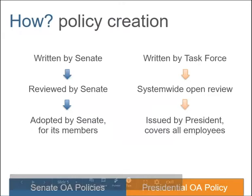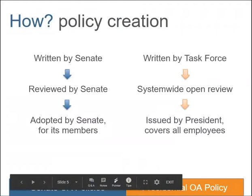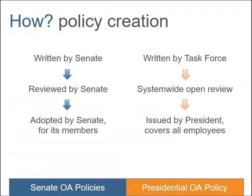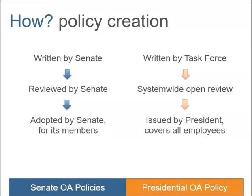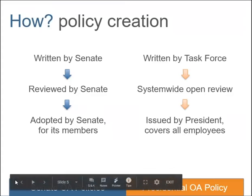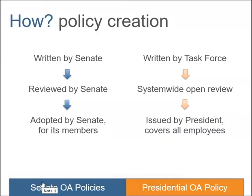Our Senate policies — the UCSF one and the system-wide one — were adopted the way you're used to seeing: a representative self-governing body of the Senate votes to impose it upon themselves. There is no such body for everyone else. So to have a policy that applies across the system to all employees, you have to get it passed as a university policy through system-wide review, with public comments, management consultation, the policy advisory committee, and eventual issuance by the president.